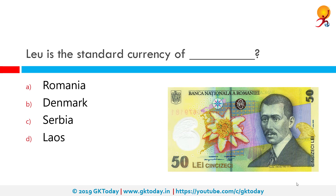Leu is the standard currency of which country? The correct answer is Romania. The Romanian Leu is the currency of Romania and is subdivided into 100 Bani, a word that is also used for money in the Romanian language. One Leu is equivalent to 16.18 Indian rupees.